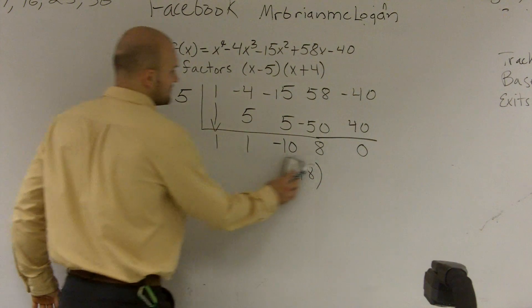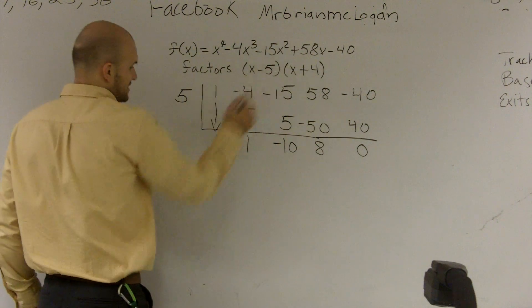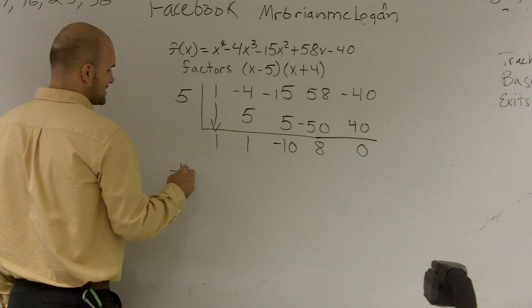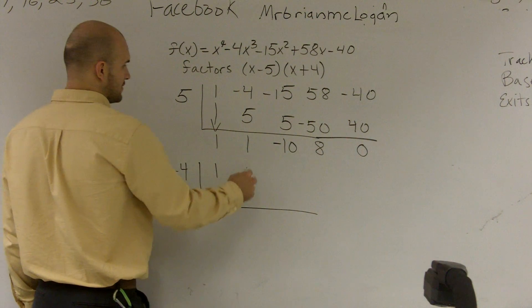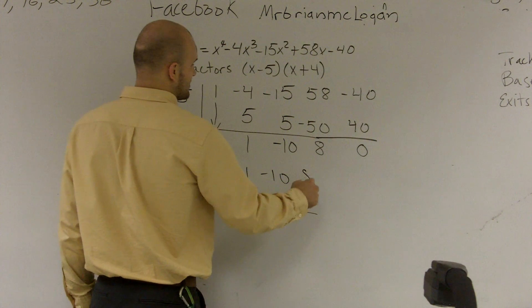So I'm going to do synthetic division again. But now, I'm going to use synthetic division with my other possible factor. So I'll use, now I'm going to use my answer 1, 1, negative 10, 8.